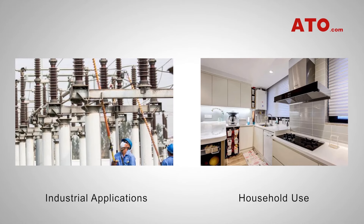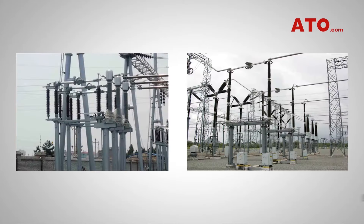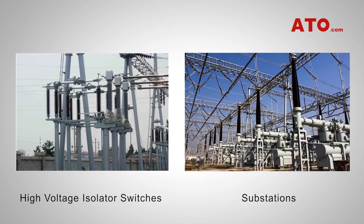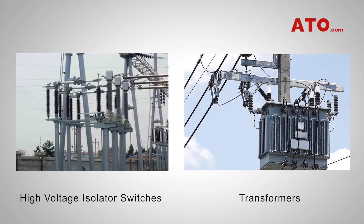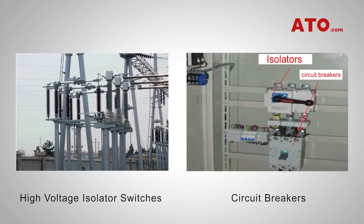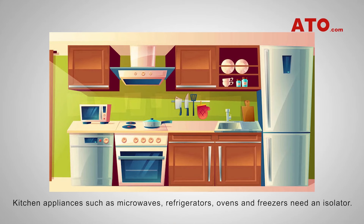All electrical equipment requires servicing and maintenance from time to time. Current protection devices such as isolators have become standard equipment and are installed in everything from domestic housing to electrical substations. High voltage isolator switches in particular are used in power grids and substations to efficiently isolate very high voltage apparatus such as transformers and circuit breakers when they are due for maintenance. In high voltage power systems, isolators are used in conjunction with circuit breakers to provide an extra layer of safety. Isolator switches can also be applied to household appliances.